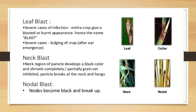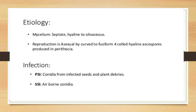Etiology is the morphological study of the pathogen — how it looks. The mycelium is the group of hyphae. Mycelium is septate, hyaline to olive. Reproduction is asexual, by curved to fusiform, four-celled, hyaline ascospores produced in perithecia. Perithecia are the spore fruit structures where spores can survive under adverse climatic conditions.